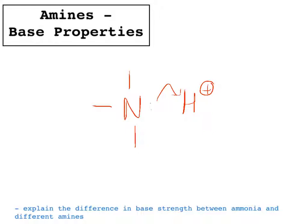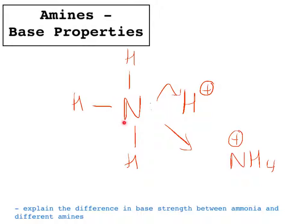If we think about ammonia, what happens is it forms an ammonium ion by accepting the H⁺ and forming NH₄⁺ — the plus charge is on the nitrogen. So if we can make that positively charged nitrogen more stable, that will mean we have a stronger base. The more stable the positively charged nitrogen, the stronger the base will be.